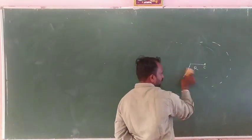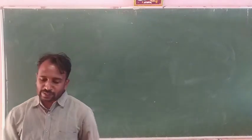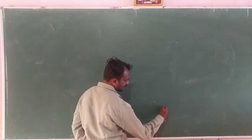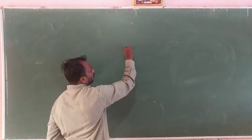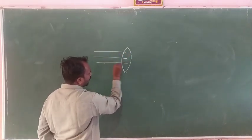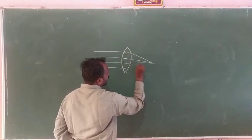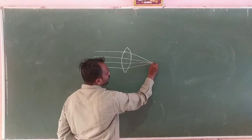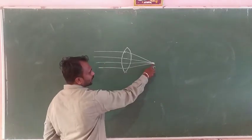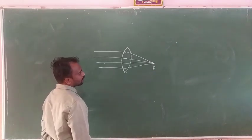In a convex lens, we consider two focal lengths — one on each side. When a parallel beam of light rays passes through the convex lens, these rays meet at a single point on the principal axis, and that point is the principal focus F.